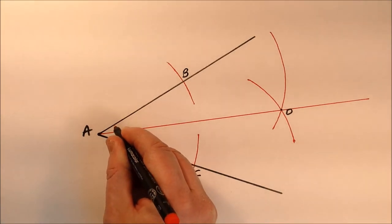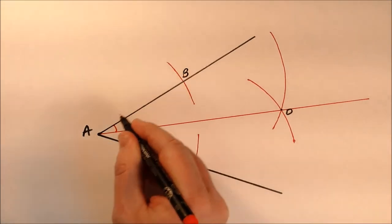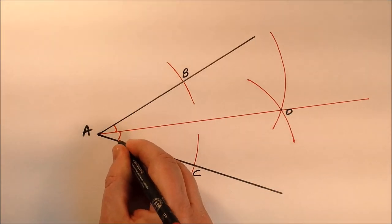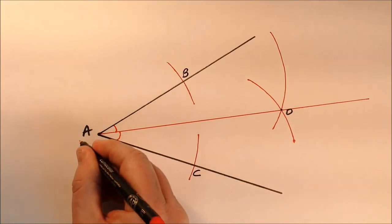So the measure of this angle B, A, D will be the same as the measure of this angle D, A, C.